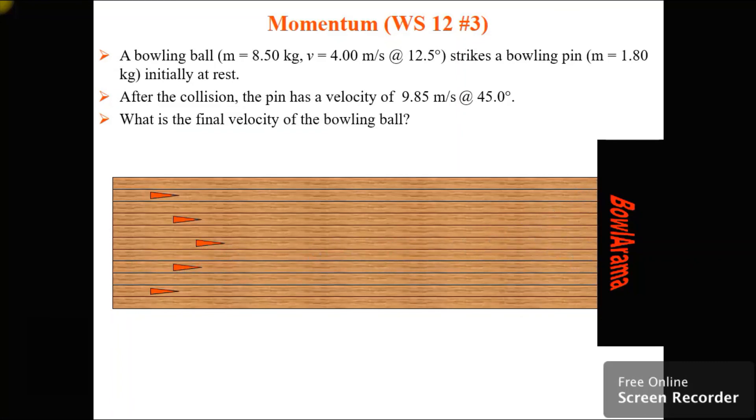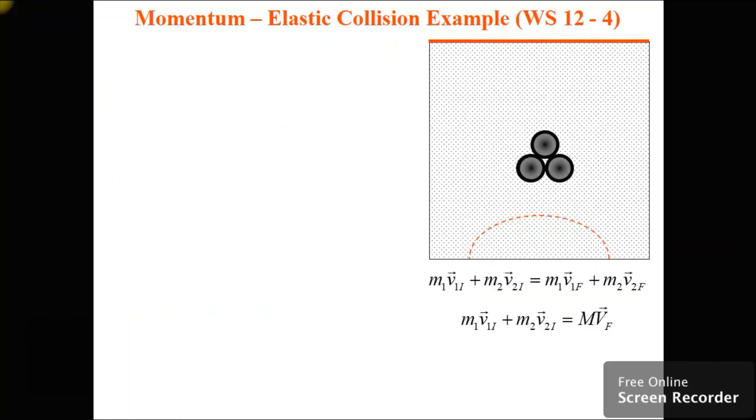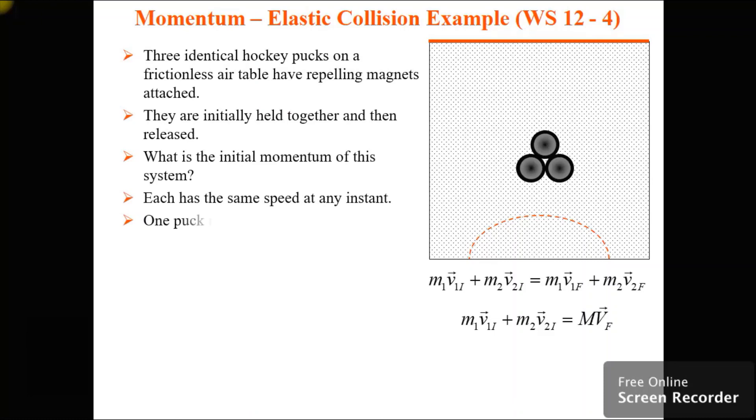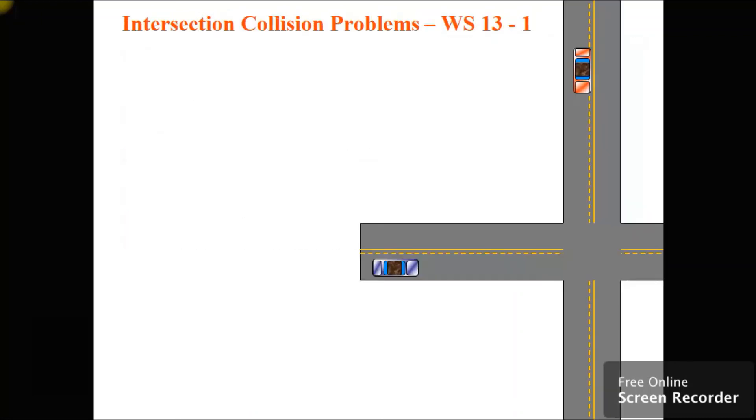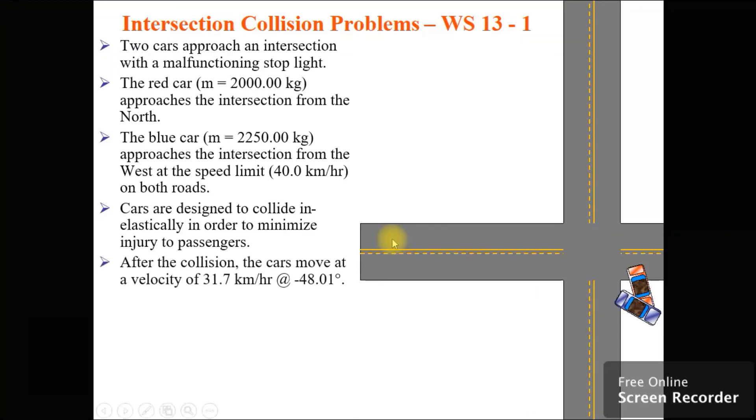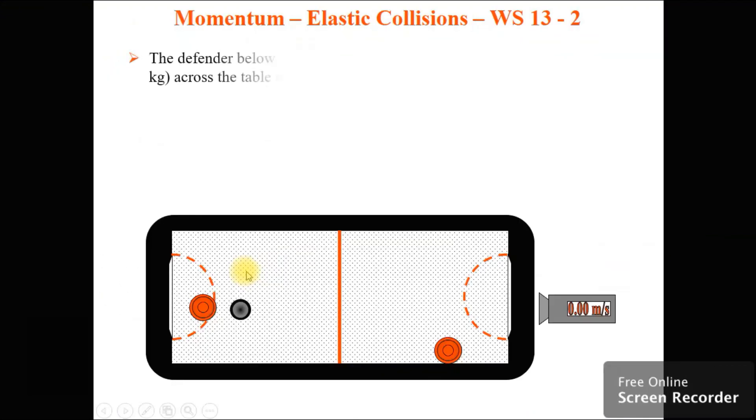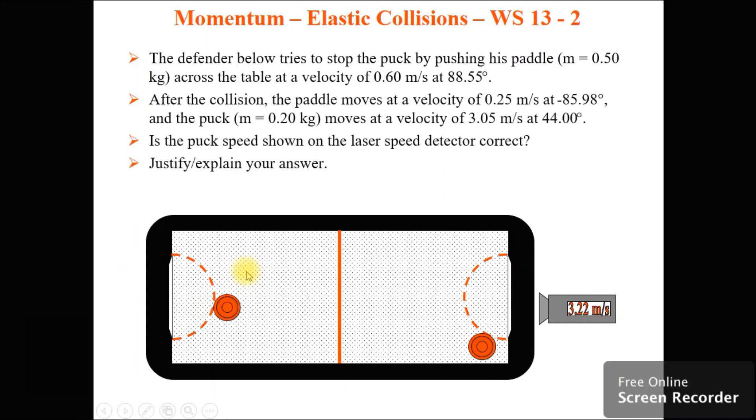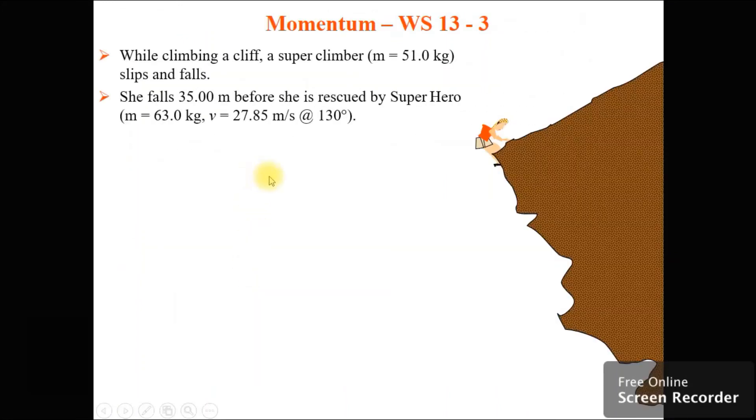So, the bowling ball hits the pin, they go off at an angle. Same thing. This one is more typical of what happens in the real world because people do this kind of accident reconstruction all the time. I think we'll call this good enough although this is a cute little animation. She falls and super dude catches her and you can figure out the vectors of that.